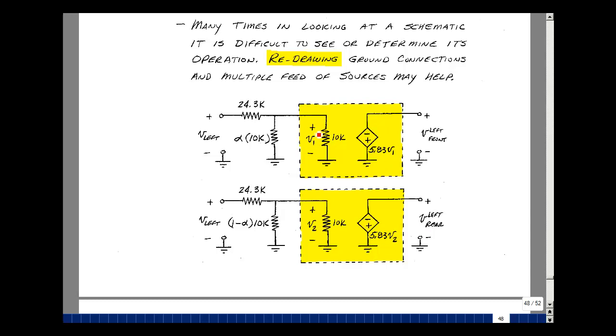So let's analyze the circuit. The voltage V1 is a voltage divider with these two in parallel. And whatever voltage shows up here gets amplified by minus 5.83. Same is true here. I've got a voltage divider. Whatever shows up here gets amplified by minus 5.83. So let's analyze the circuit on the next page.